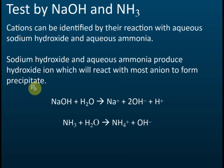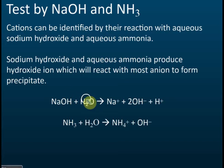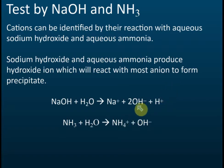But why, when we add sodium hydroxide and aqueous ammonia solutions to a solution containing positive ions, do they form a precipitate? The reason is: sodium hydroxide, when it dissolves in water, forms sodium ions, hydroxide ions, and hydrogen ions. Out of these ions, which ones will react with the positive ions?